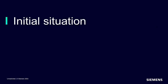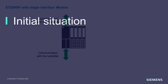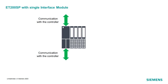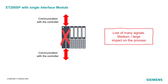The standard setup of an ET200SP station is based on a single interface and I/O modules. This interface is used for the PROFINET communication with the S7 controller. In case of interface module failure, the communication is interrupted and many I/O signals are lost.